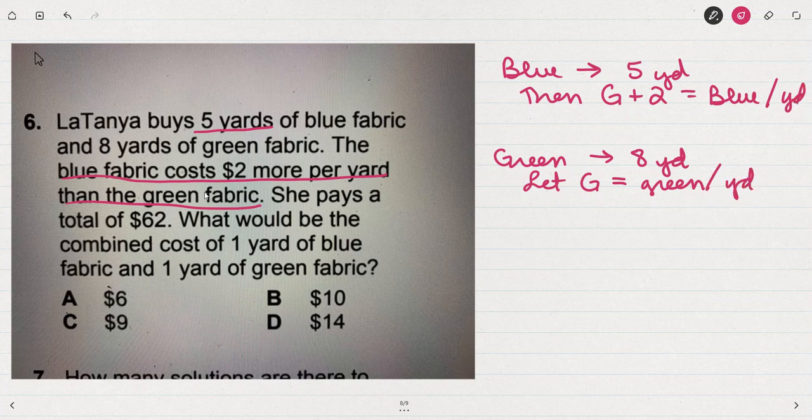Because the price of the blue fabric is being described with the price of the green fabric, I know I have to start with knowing what the green fabric costs. So I'm going to let G represent the cost of one yard of green fabric. And if the blue fabric is two more, then the cost of one yard of blue fabric will be G plus two.